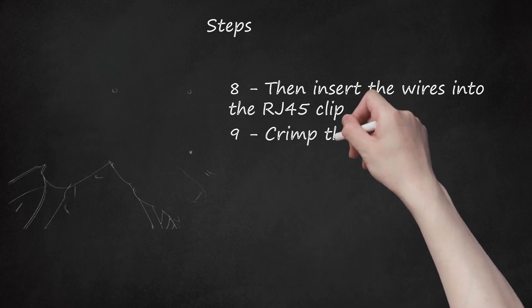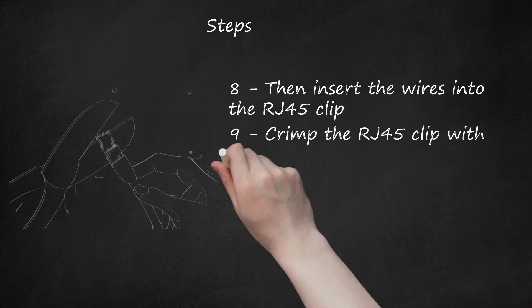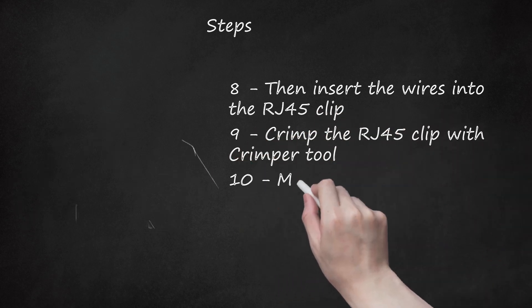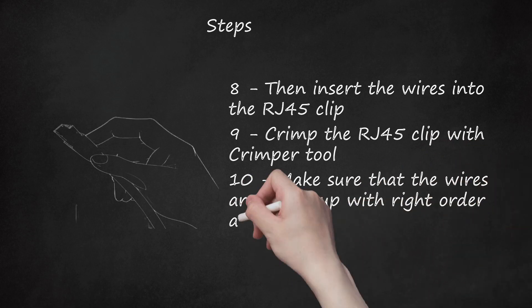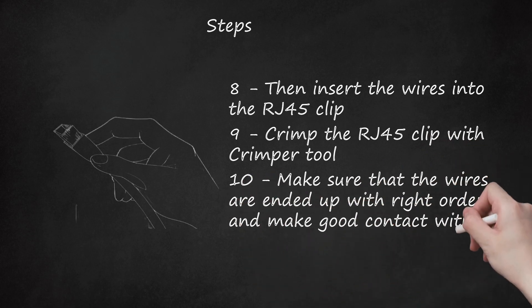Step 9: Crimp the RJ45 clip with crimper tool. Step 10: Make sure that the wires are ended up with the right order and make good contact with metal parts in the RJ45 end.